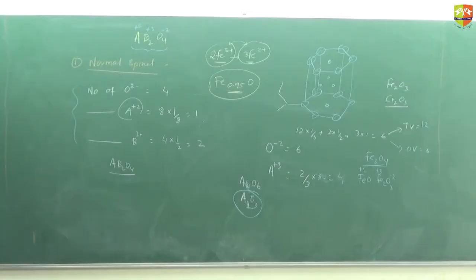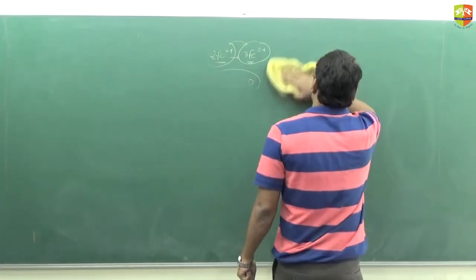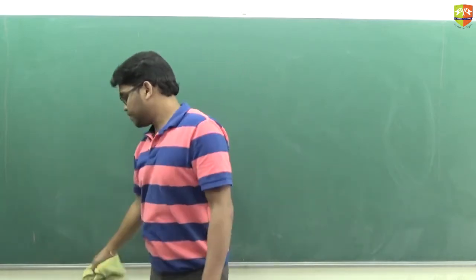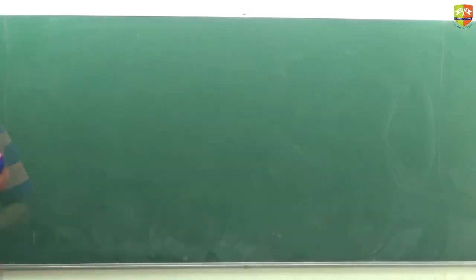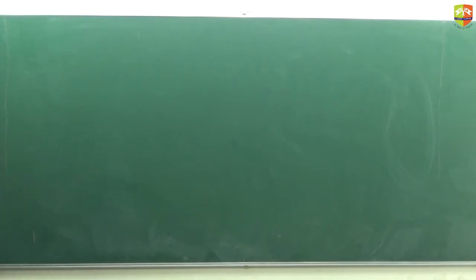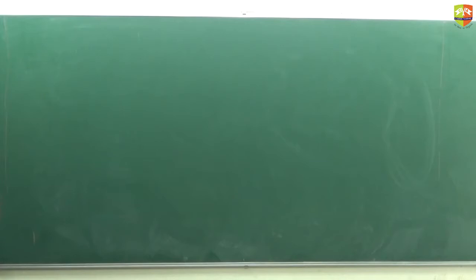Imperfection or defect is the change in the arrangement of atoms. Not only the arrangement, but also the change in properties of atoms. When you heat a solid or mix some impurity into it, the property changes from ordered arrangement to disordered arrangement. This deflection from the ordered arrangement, whether in terms of properties, color, or anything else, is called a defect or imperfection.